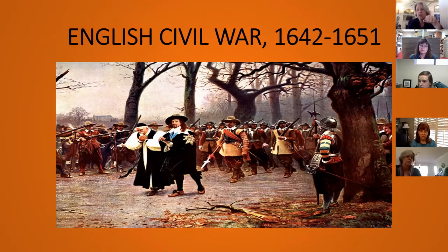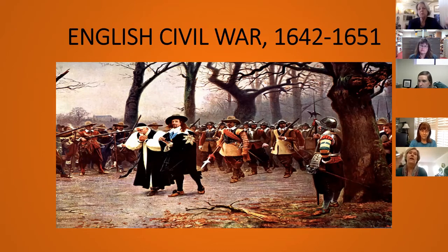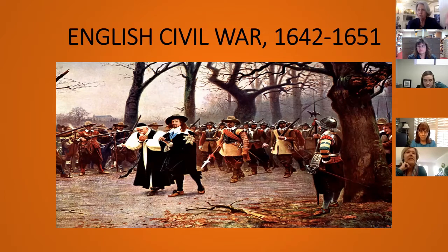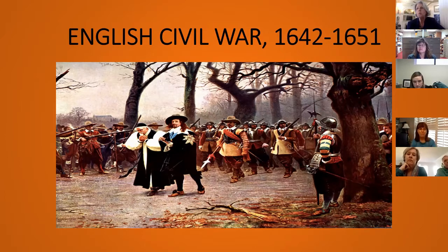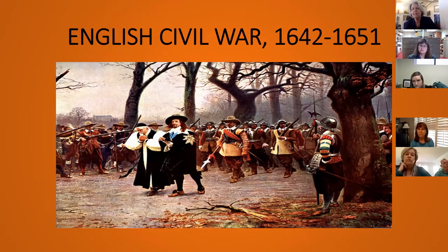Charles revived the Star Chamber — unused for almost three centuries since Henry II — which was the king's own court system rather than Parliament's. Anyone who opposed him was brought before the Star Chamber for summary trial, judgment, execution, or banishment. The crisis comes in 1640 when the Scots become furious because Charles appointed Archbishop Laud, who added embellishments to the church — books of common prayer, specific liturgy, robes, incense — that the Presbyterian Scots absolutely rejected.